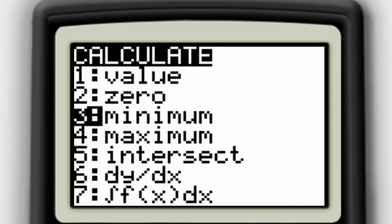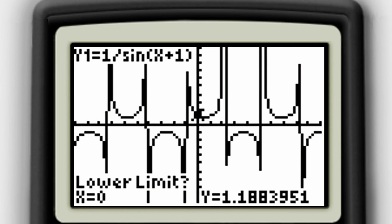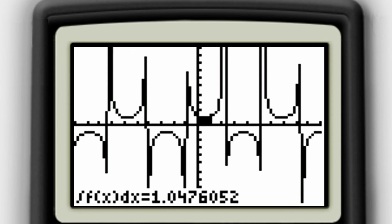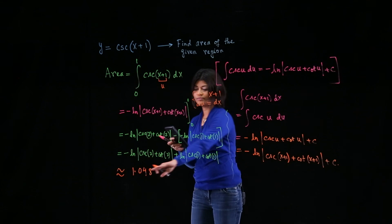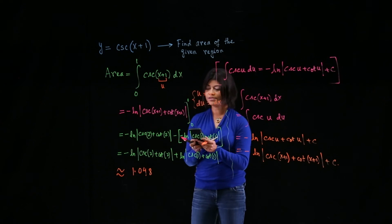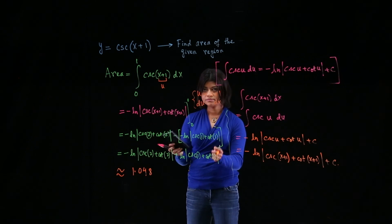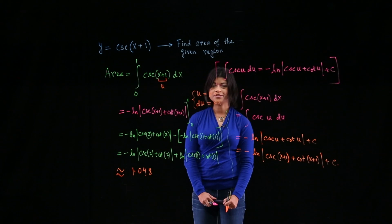And then use the integration feature under CALC. And write down the limits, x equals 0 and x equals 1 as the upper limit, and then integrate. And you see that it's giving you the area of that region that already you know is given to you. And the area is exactly the same. It's approximately 1.048. So everything is correct. Thank you.